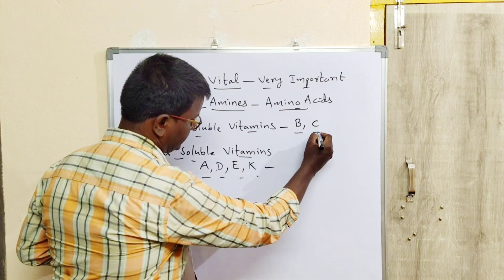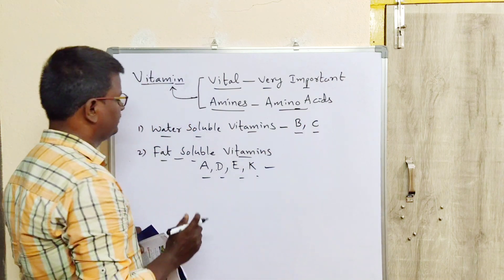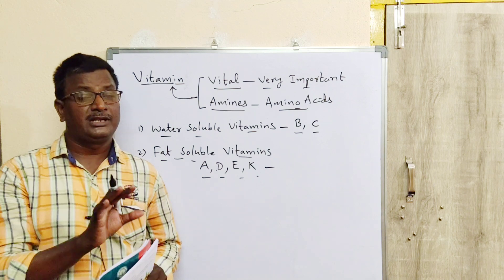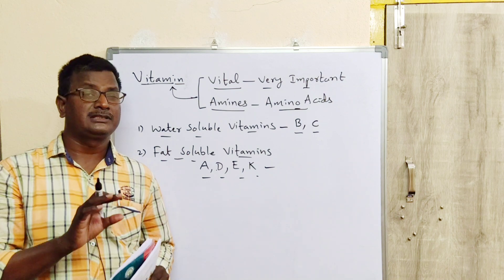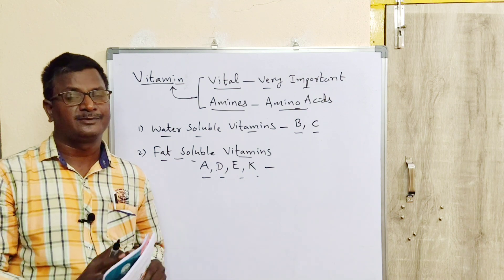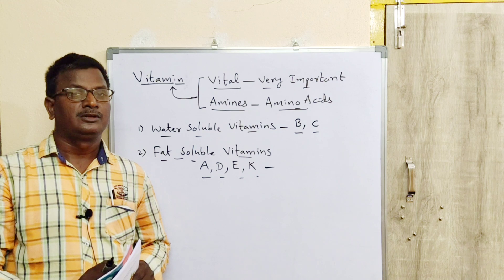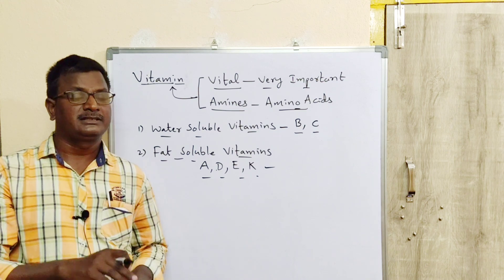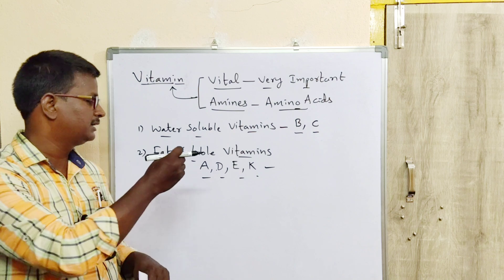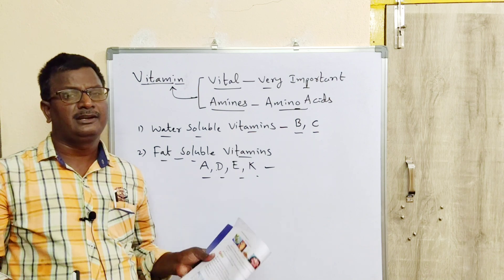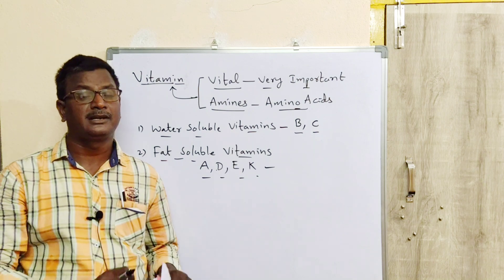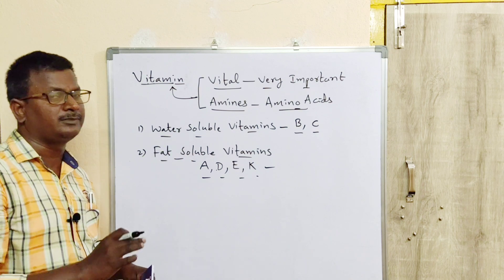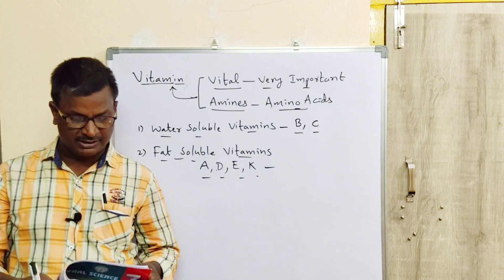B and C vitamins are water-soluble vitamins. According to solubility, vitamins are two types: some vitamins are soluble in water and some vitamins are soluble in fat. For this reason, vitamins are divided into water-soluble vitamins and fat-soluble vitamins.